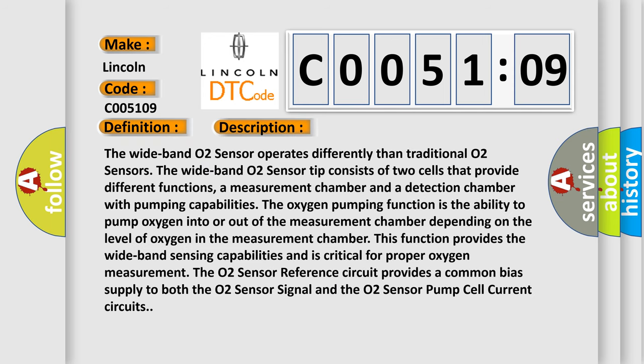The wideband O2 sensor operates differently than traditional O2 sensors. The wideband O2 sensor tip consists of two cells that provide different functions, a measurement chamber and a detection chamber with pumping capabilities.